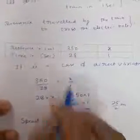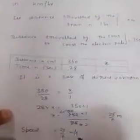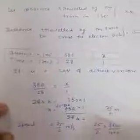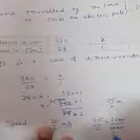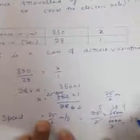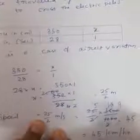So x equals 25 by 2 meters. That means the train covers 25/2 meters in one second, so the speed of the train is 25/2 meters per second. To convert to kilometers per hour, we divide meters by 1,000 and multiply by 3,600, giving 25 divided by 2 multiplied by 3,600 divided by 1,000. That equals 45 kilometers per hour. This is the answer.